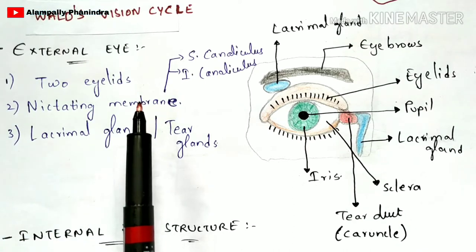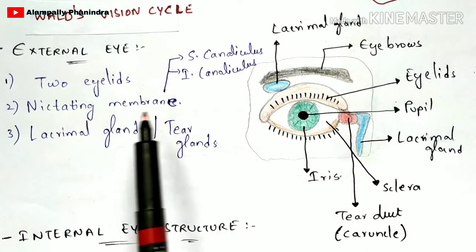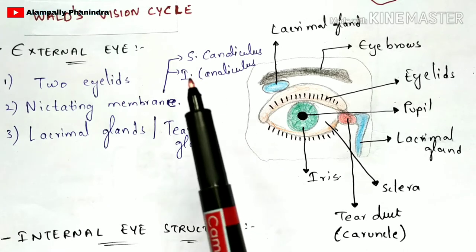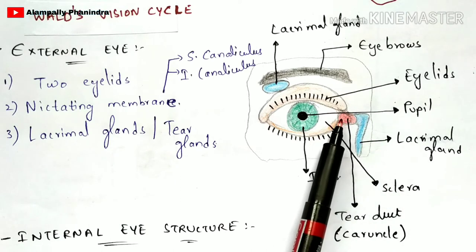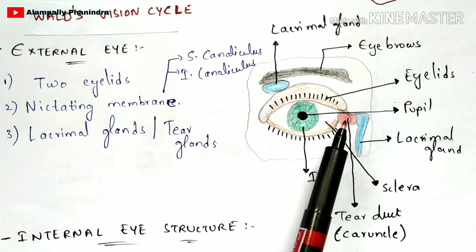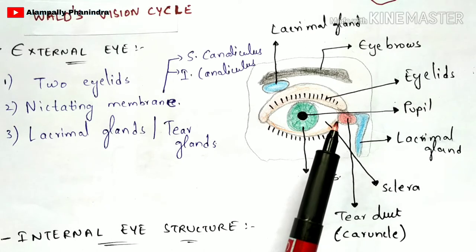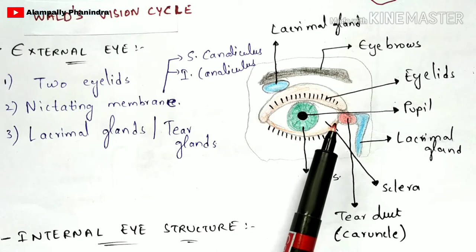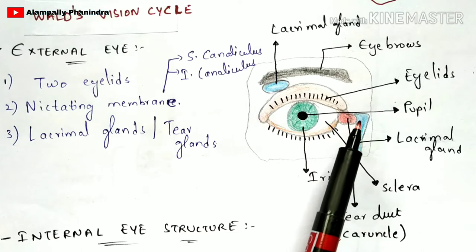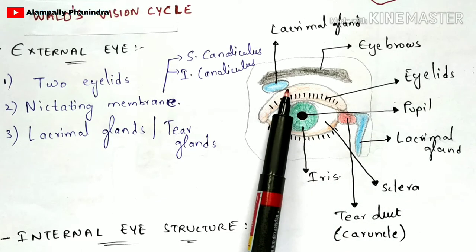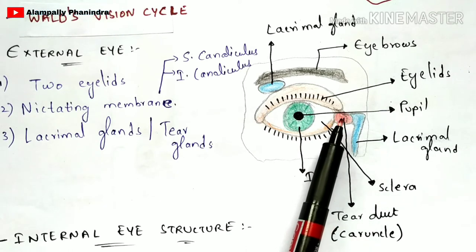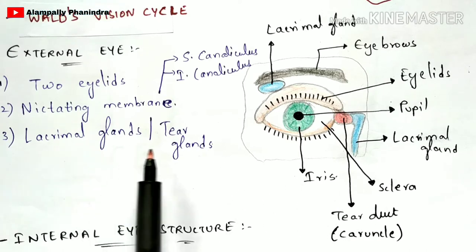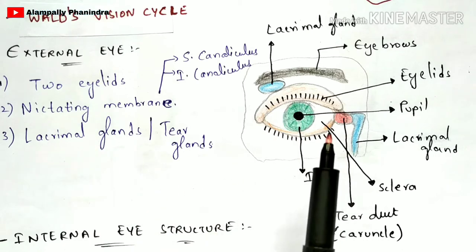Next, the nictating membrane will be present at the back side of our eye. This nictating membrane consists of superior as well as inferior canaliculus, and there is the presence of lacrimal glands. The tear duct mainly helps in the production of tears during sad times. The formation of tears occurs in the lacrimal glands — that water-like secretion is secreted by the lacrimal glands. The production of tears occurs from the tear duct, which is also called the caruncle. The lacrimal glands are also called tear glands.